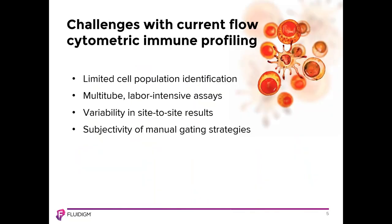Current fluorescent cytometry approaches to immune profiling have limitations that present challenges for studies requiring immune monitoring. These challenges include limited cell population identification, the use of multiple tubes which are labor-intensive, variability in site-to-site results, and the subjectivity of manual gating strategies. When sample volume is limited or sample is precious, the ability to analyze all needed populations in a single tube is extremely valuable.